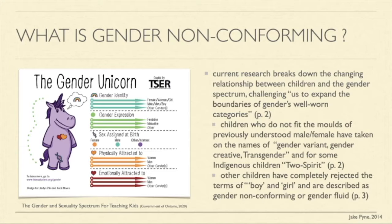Current research breaks down the changing relationship between children and the gender spectrum, challenging us to expand the boundaries of gender's well-worn categories. Children who do not fit the molds of previously understood male-female have taken on the names of gender variant, gender creative, transgender, and for some indigenous children, two-spirit. Other children have completely rejected the terms boy and girl and are described as gender non-conforming or gender fluid.